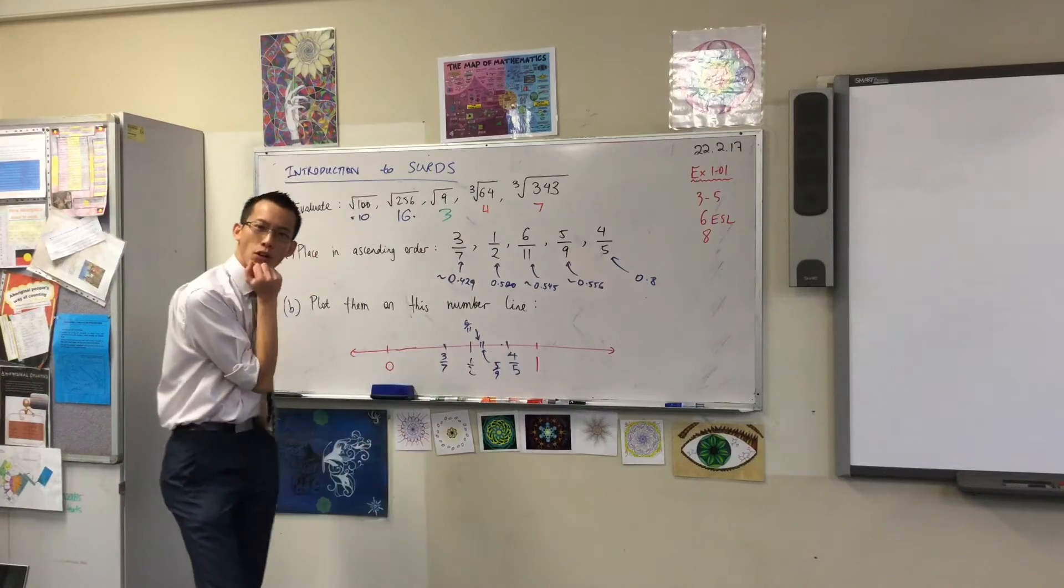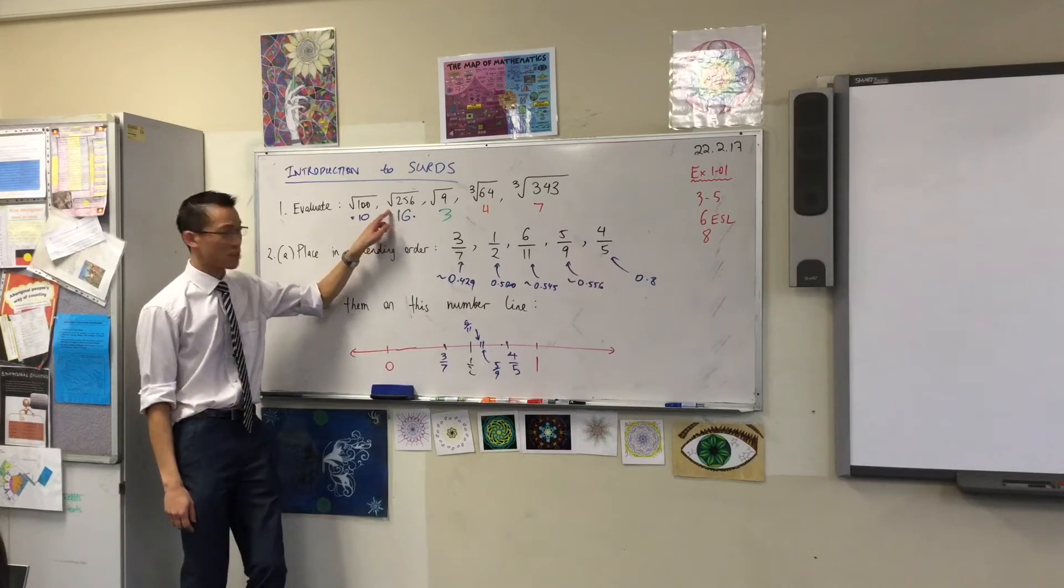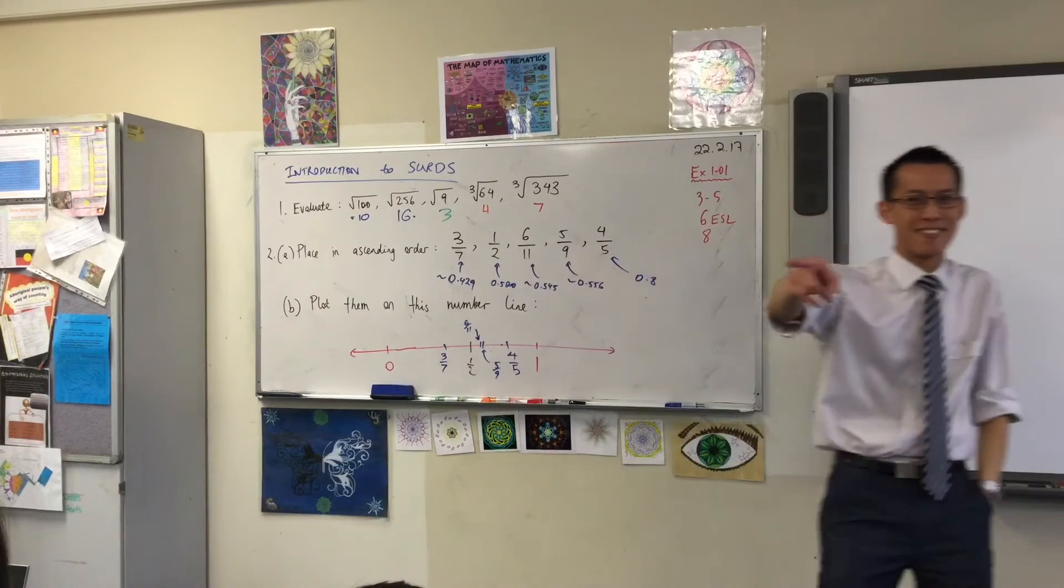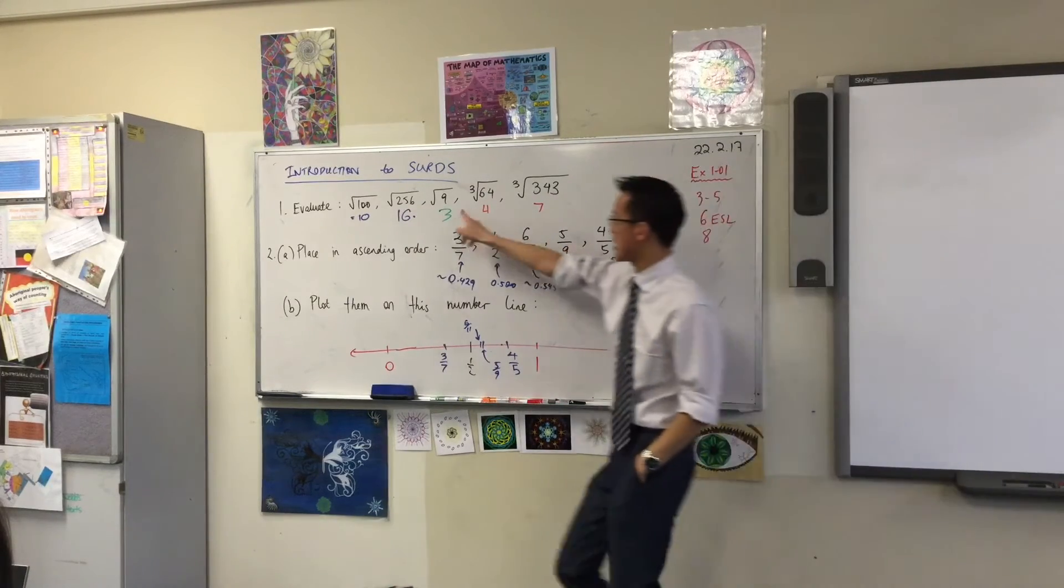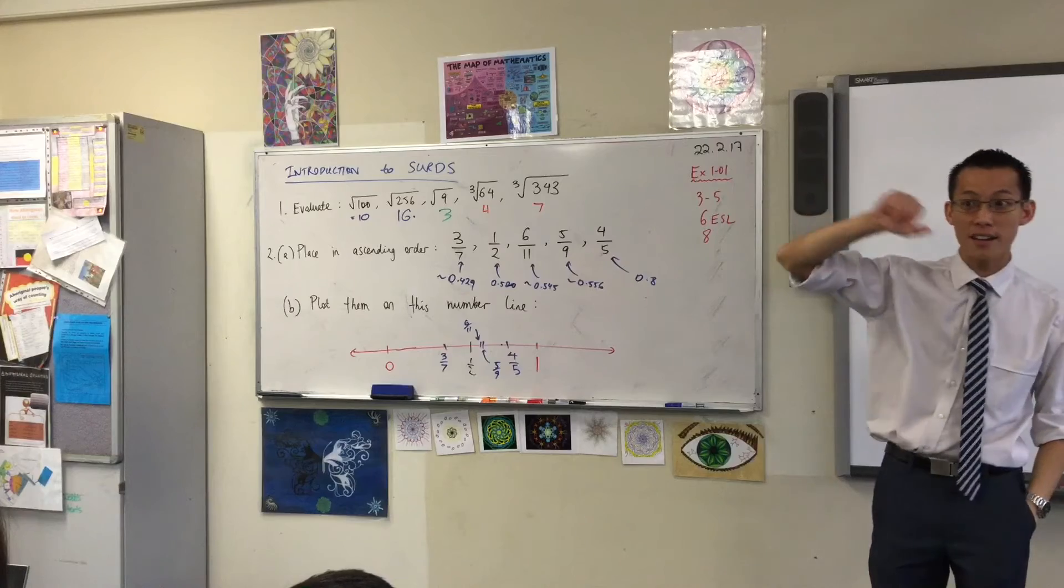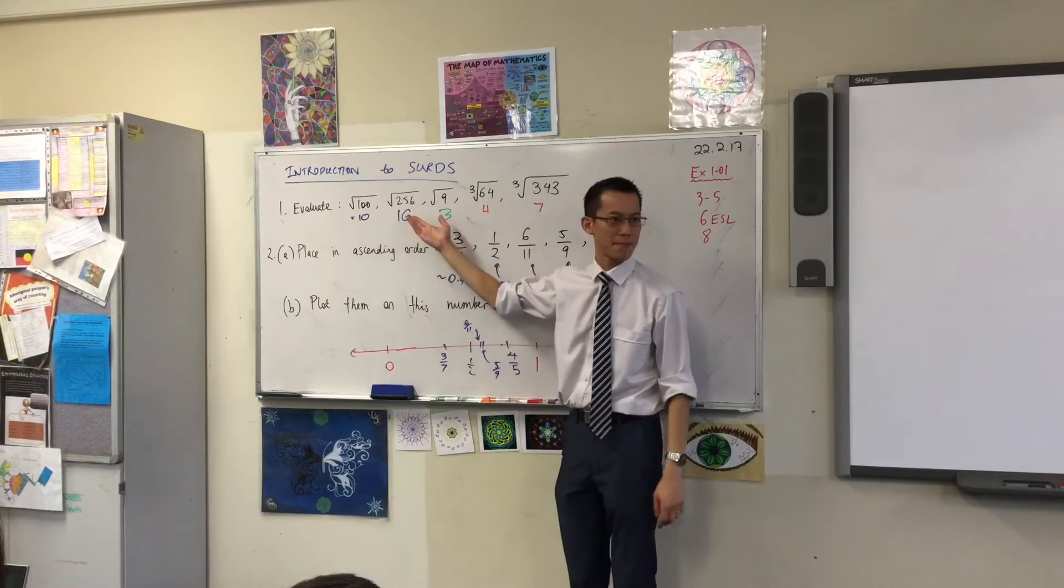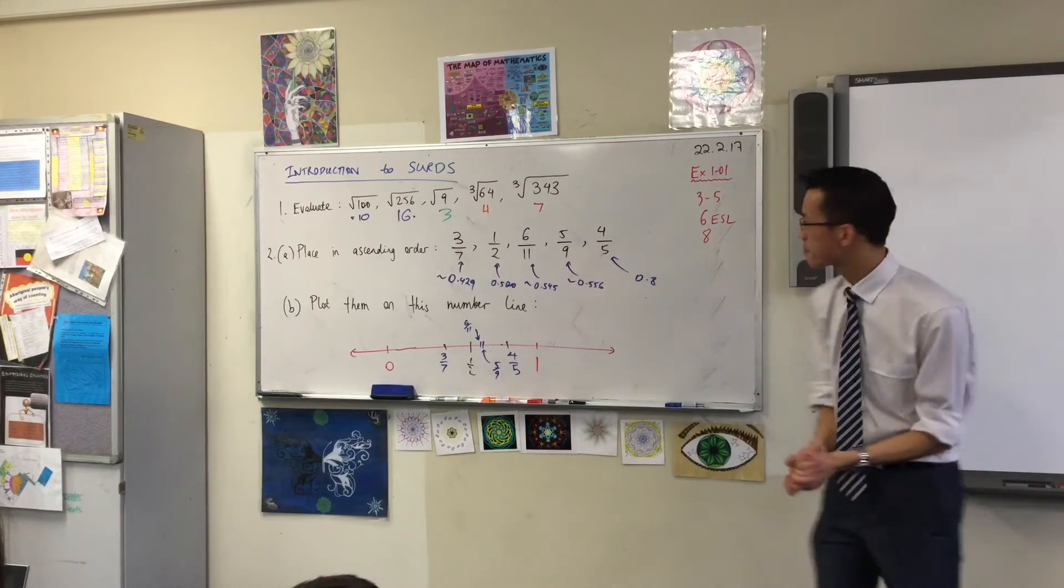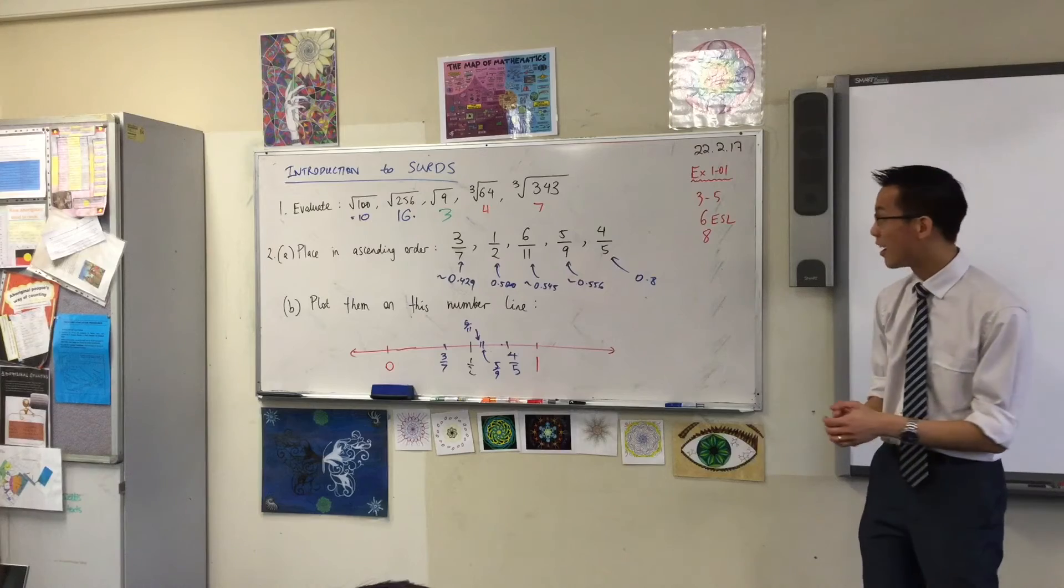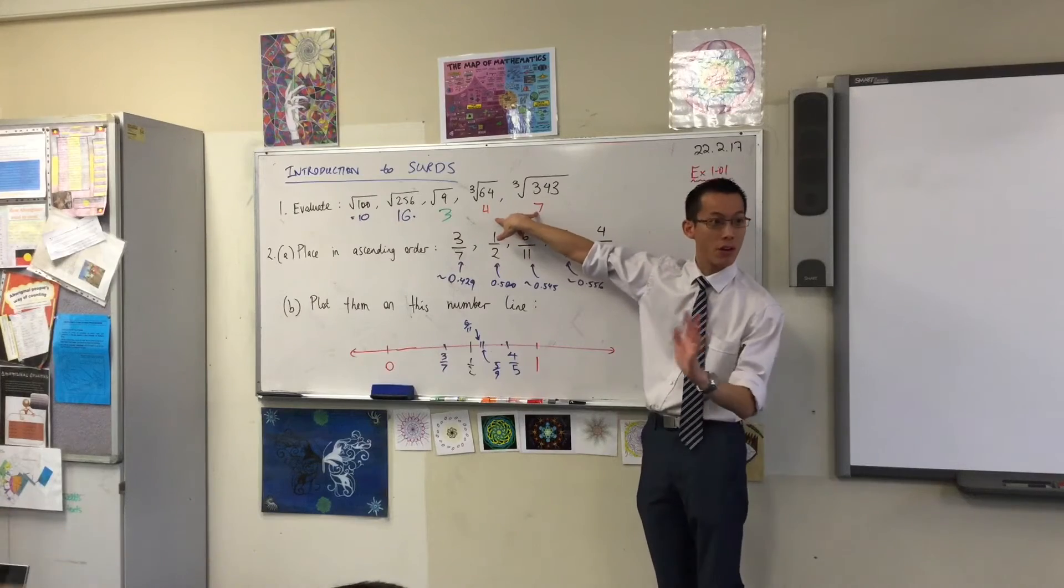So you've encountered SURDS before. For at least a couple of years you've encountered them because you've been doing this kind of thing, right? So you did all these square roots, you did all these cube roots, but I picked my numbers really deliberately. Why did I pick, say these three numbers, why did I pick 100, 256, and 9? What's special about them? When you take the square root of these guys, you just end up with something nice and neat. 100, 256, and 9, they're all squares. 64 and 343, what's special about those two? They are nice, neat cubes of exact numbers. And that's why your answers were also nice and neat.